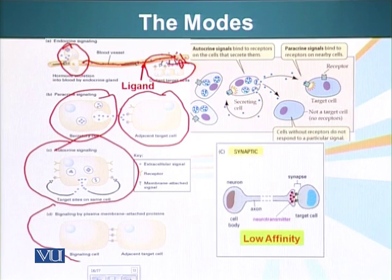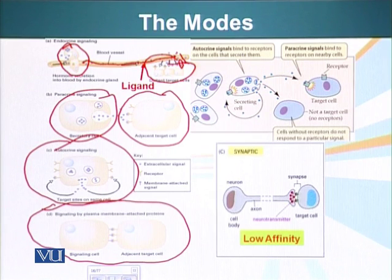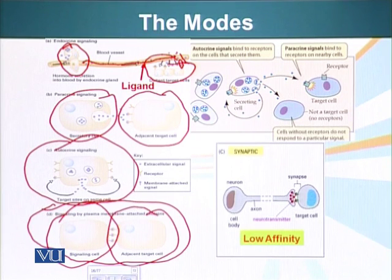Signaling by plasma membrane-attached proteins: signaling molecules don't have to be mobile all the time. They can also be attached or embedded in the plasma membrane of a cell. So when two cells interact, one has a ligand or signaling molecule on its plasma membrane and the other has a receptor on its cell surface. When this interaction takes place, the signaling information is transmitted to the target cell.